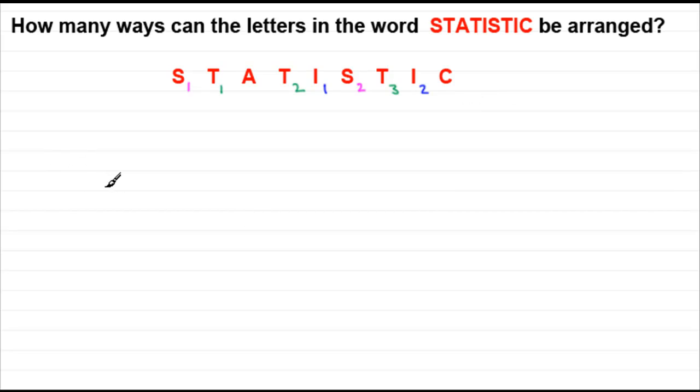Now, when it comes to working out the number of arrangements, I've got to think about how many there would be if all the letters were different. Well, I've got nine letters here, so that would be nine factorial ways of arranging them amongst themselves. But they're not all different. You can see we've got several S's, two of them in fact. So as far as the S's go, we're going to need to divide by the number of ways that they can rearrange amongst themselves, which is going to be two factorial.